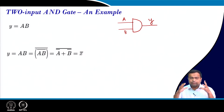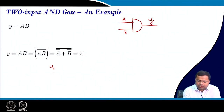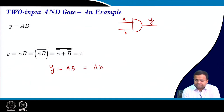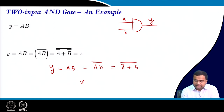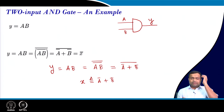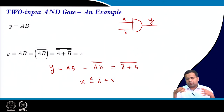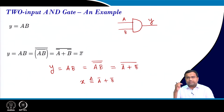We want to implement using CMOS. If we take Y equal to AB, then we can write AB as the complement of A-bar plus B-bar, and we denote X to be A-bar plus B-bar. We want to implement in this way because CMOS architecture is used for almost all digital electronics nowadays. In CMOS we have complementary MOS, that means PMOS and NMOS.